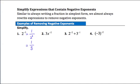Example 2: 3x to the negative second power. We need to be careful — only the x is being taken to the negative second power, not the 3. So the 3 stays in the numerator and the x moves to the denominator as x squared: 3 over x squared. There's nothing more to simplify, so that's the final answer.